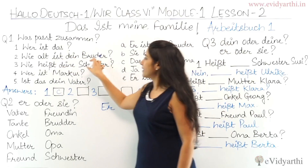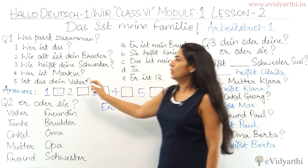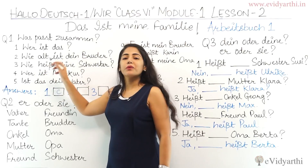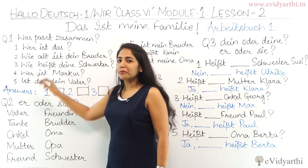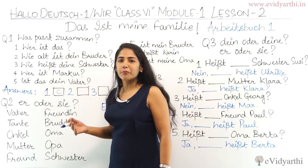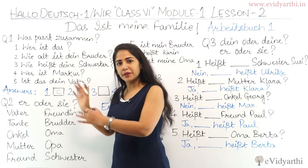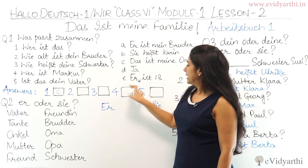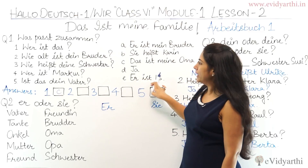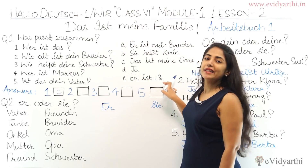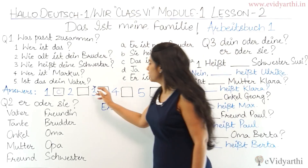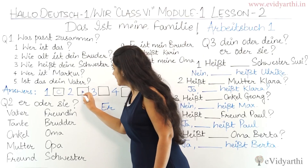Next: 'Wie alt ist dein Bruder?' — they are talking about age, so a number must be there. 'Er ist dreizehn' — he is 13. So the answer to number two is E.